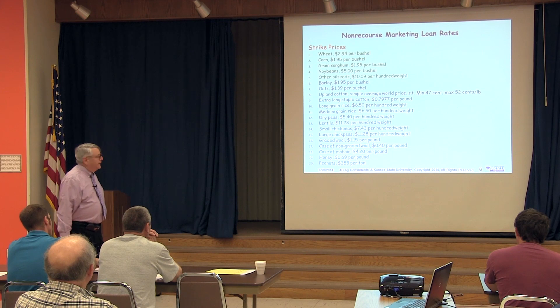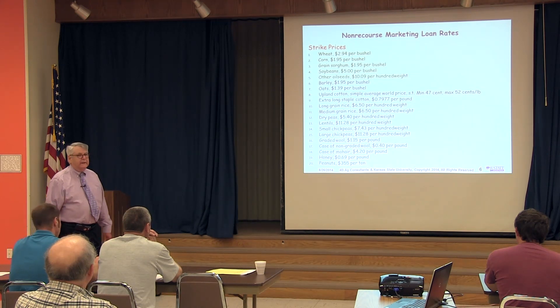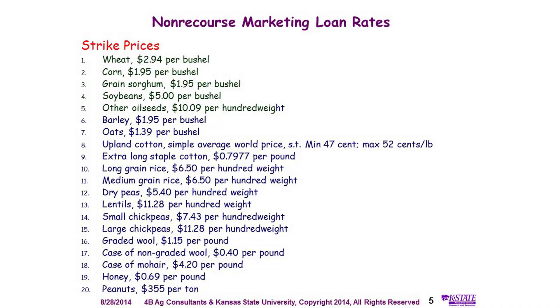These are the loan rates. As you can see, they didn't really change. These are the national average loan rates. If corn gets down to $1.95, most corn farmers are in trouble anyway — so if we get that cheap to actually trigger loan payments, it's probably pretty well done.